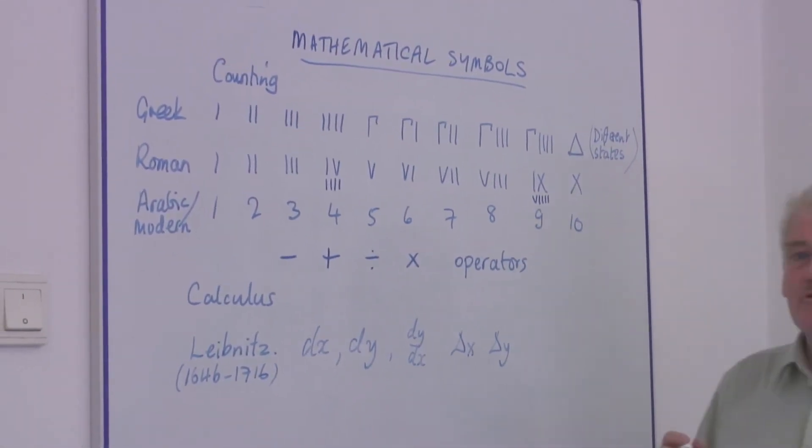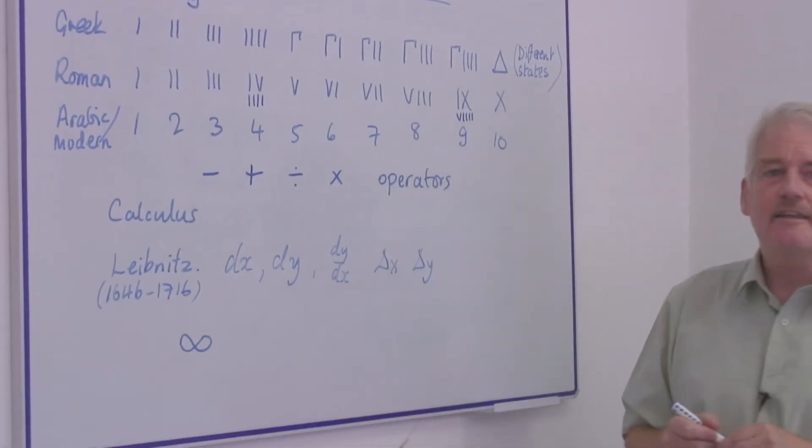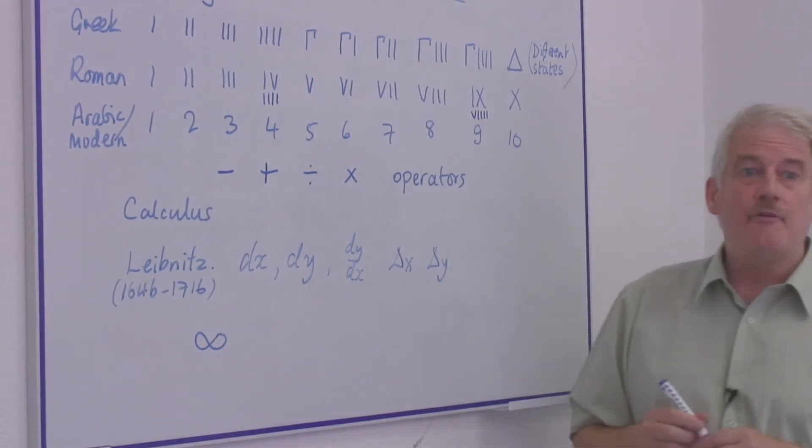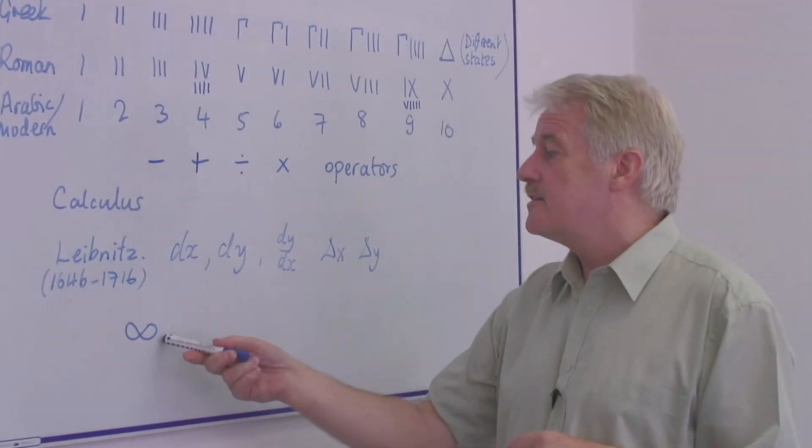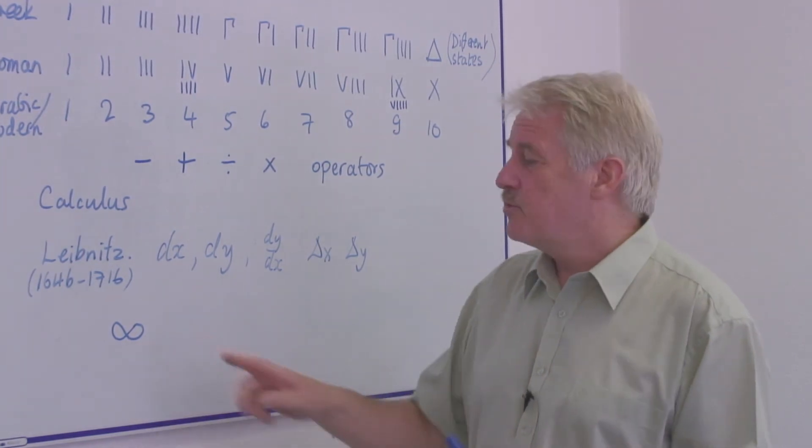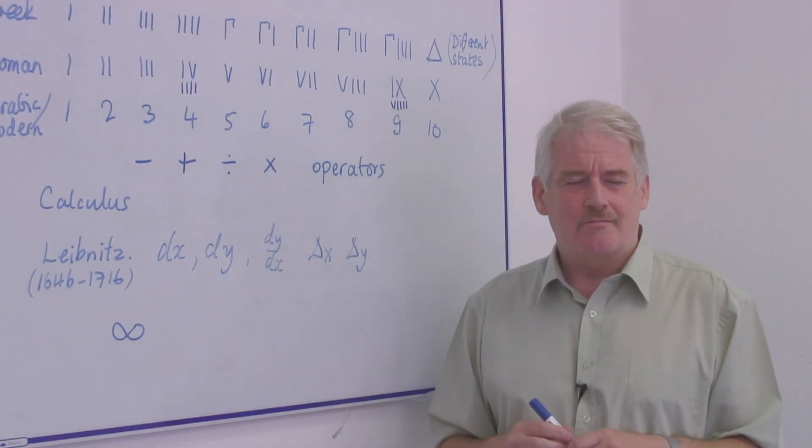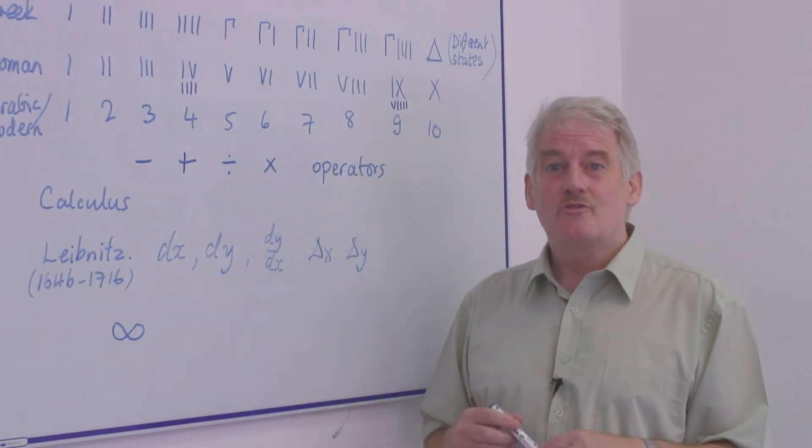And some of the most interesting ones are things like this, which we know is infinity. Nobody's ever been able to define what infinity is, but we have a symbol for it. In other words we can write a symbol for something that is impossible to imagine, like most of mathematics.